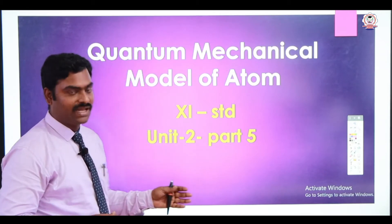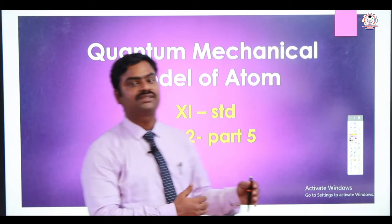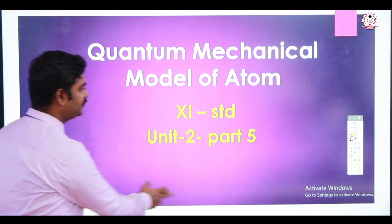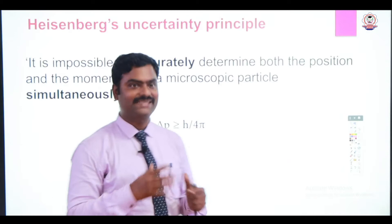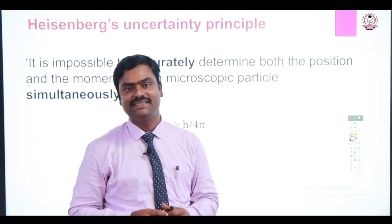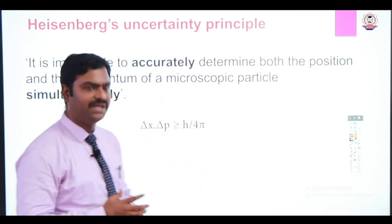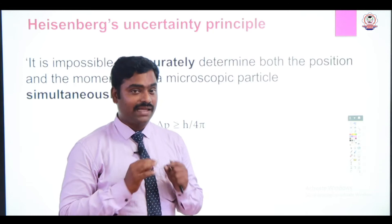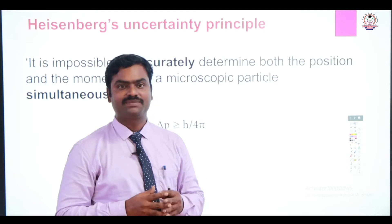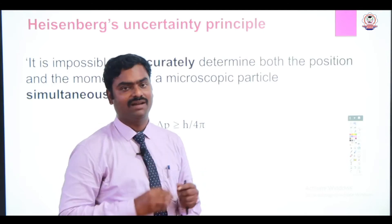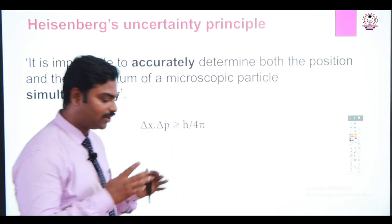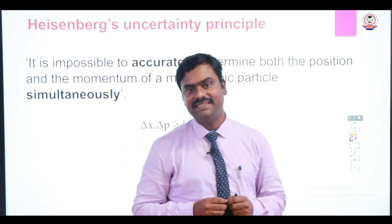This is our Unit 2, and this is the part 4 video. In this video, we are going to see what is the Heisenberg Uncertainty Principle. According to Heisenberg, we cannot accurately calculate the velocity or momentum as well as the position of microscopic particles. This is known as Heisenberg's uncertainty principle.